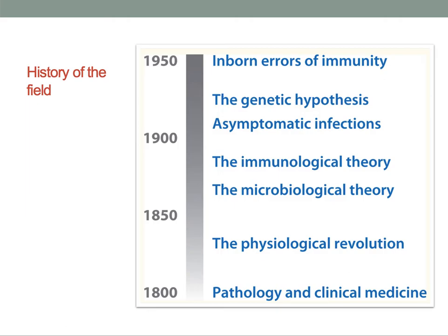The complementary idea that human germline genetic variation could account for disease development, particularly for childhood infections lethal in the course of primary infection, was proposed early on by distinguished pioneers such as Archibald Garrod with the concept of inborn errors of immunity. The first demonstration was provided in the early 1950s by the descriptions of the first primary immunodeficiency and of the protective role of the sickle cell trait against severe malaria.